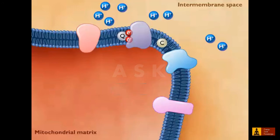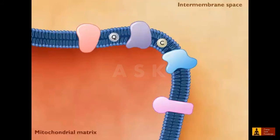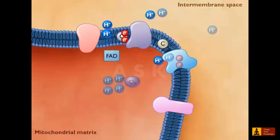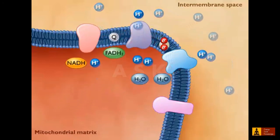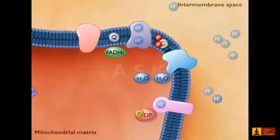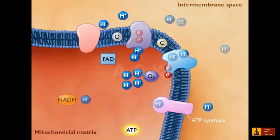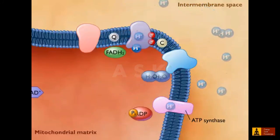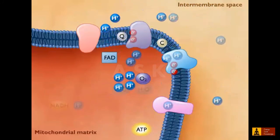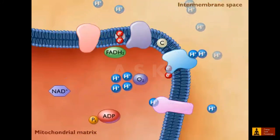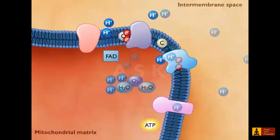The transfer of protons to the intermembrane space generates a proton motive force across the membrane of the mitochondrion. Since membranes are impermeable to ions, the protons that reenter the matrix pass through special proton channel proteins called ATP synthase. The energy derived from the movement of these protons is used to synthesize ATP from ADP and phosphate. Formation of ATP by this mechanism is referred to as oxidative phosphorylation.